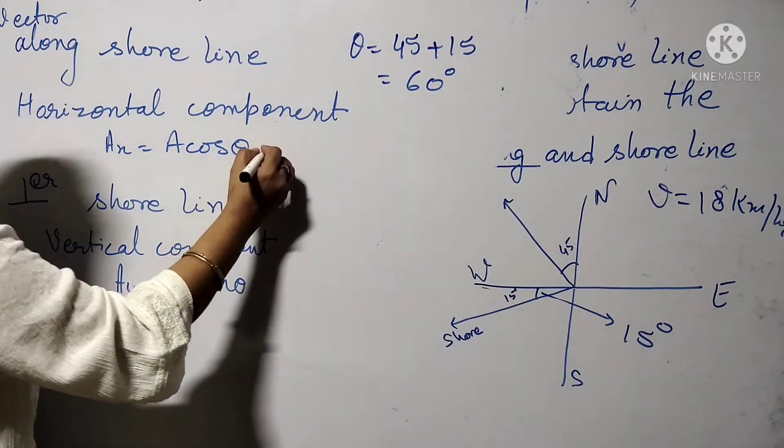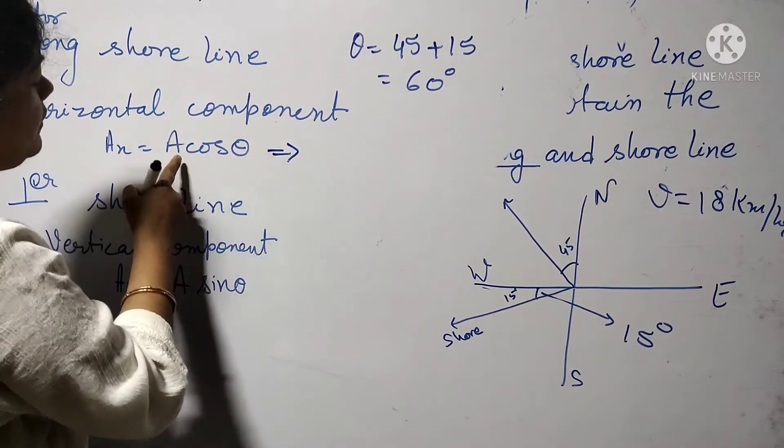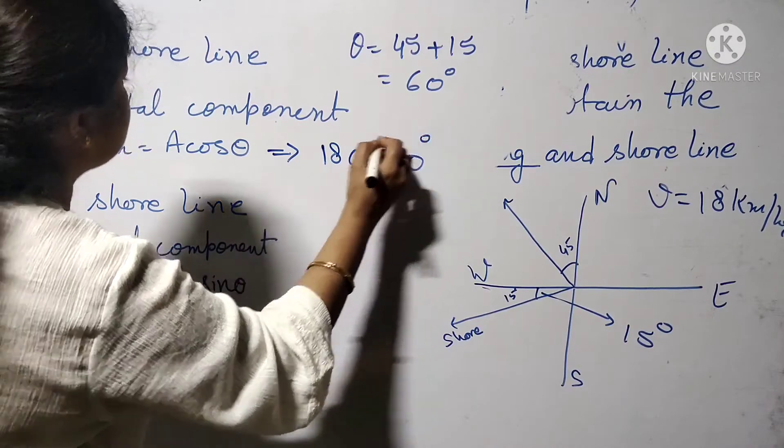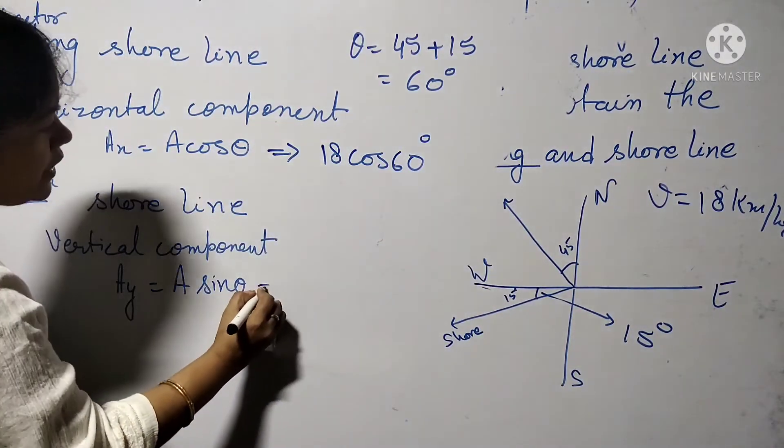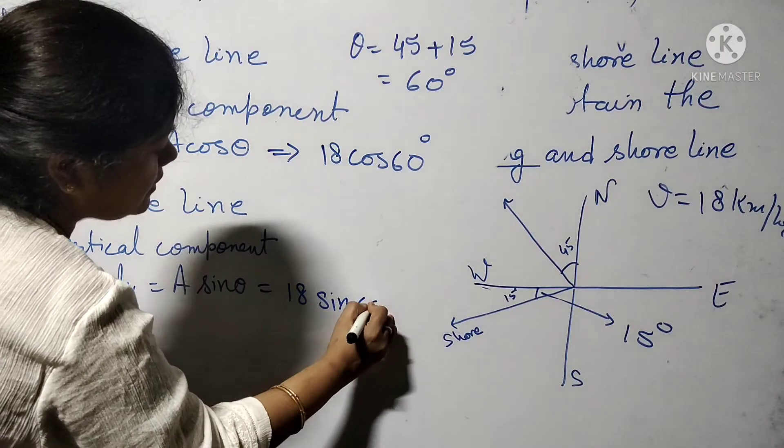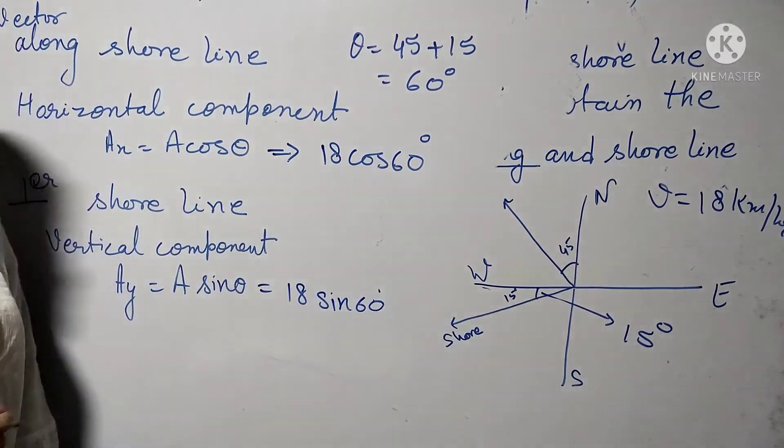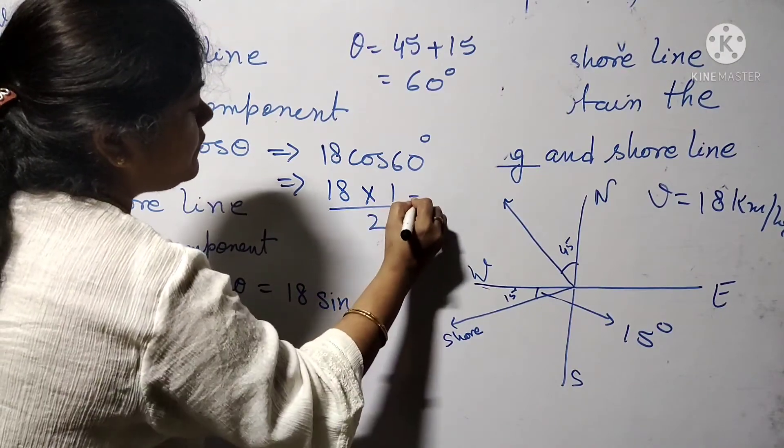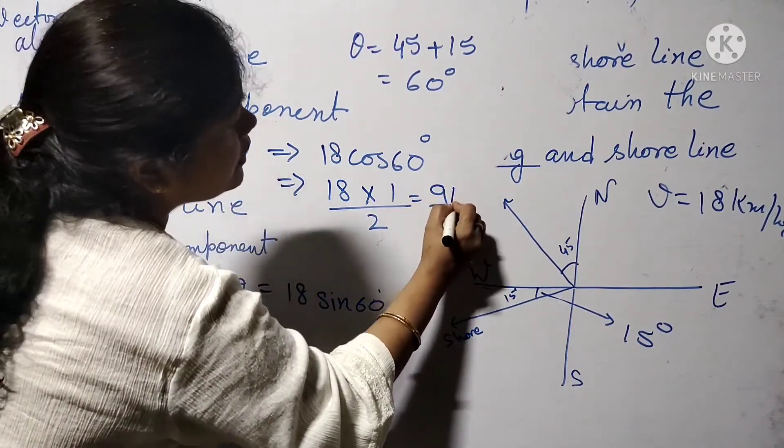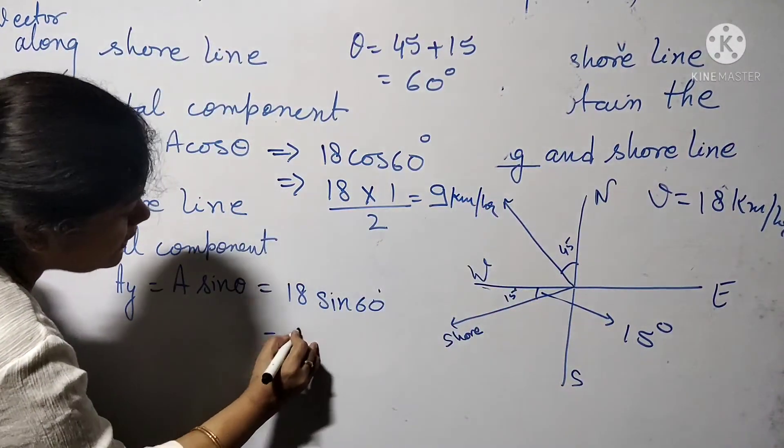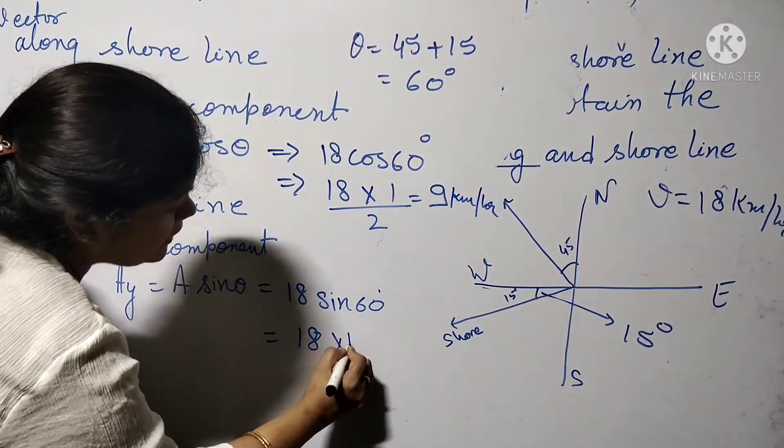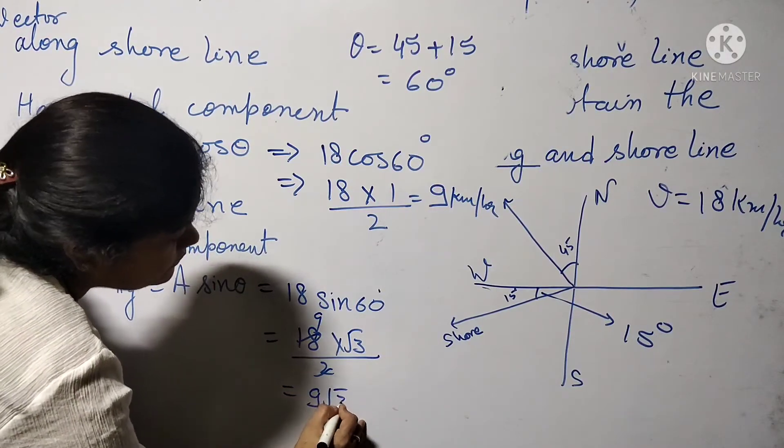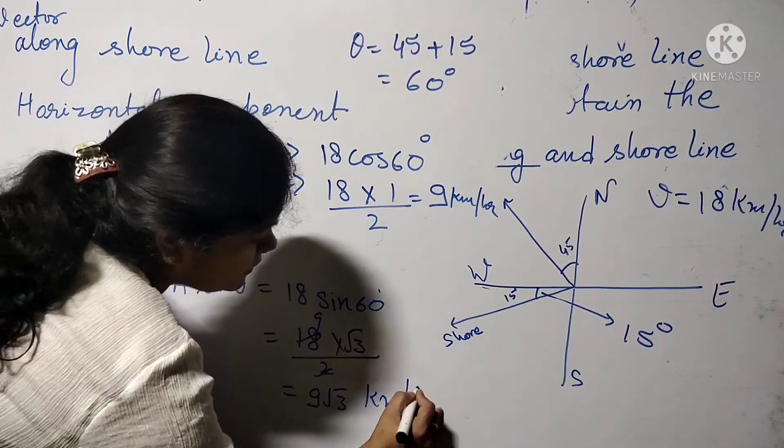Now substituting different values, we get 18 cos 60 for the horizontal component and 18 sin 60 for the vertical component. 18 cos 60 equals 1 by 2 which equals 9 km per hour, and 18 sin 60 equals root 3 by 2, that is 9 root 3 km per hour.